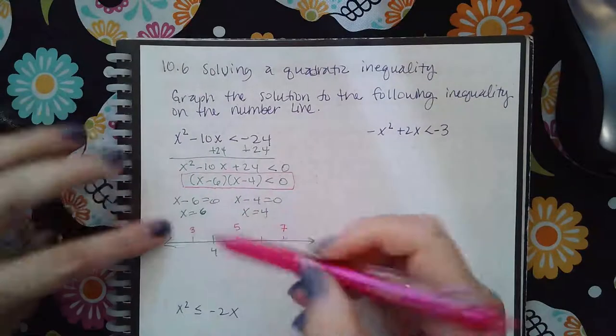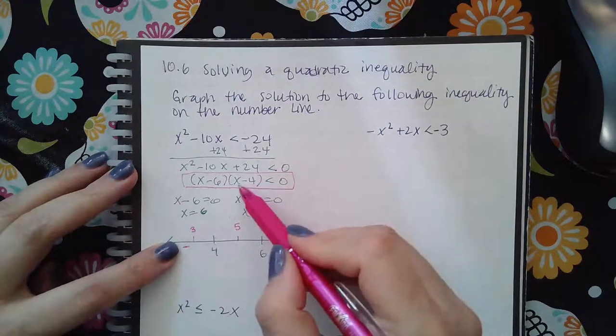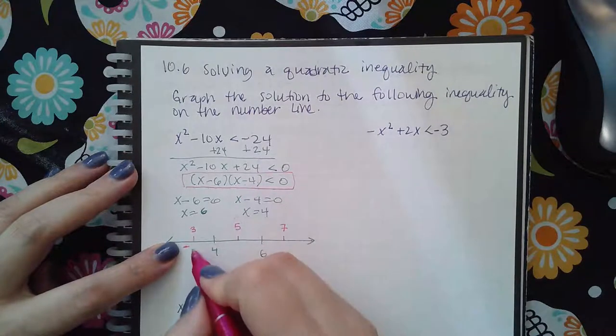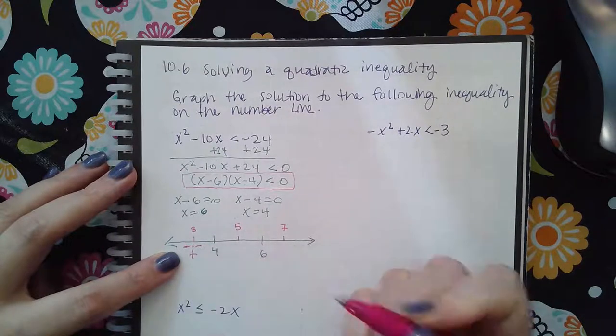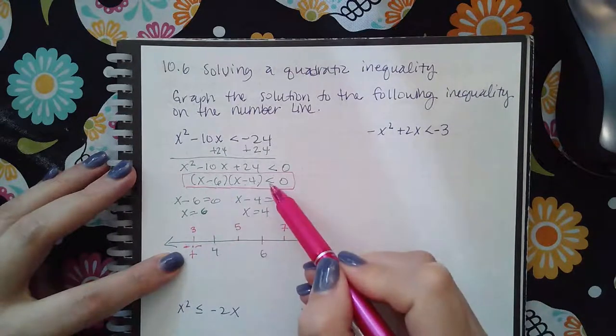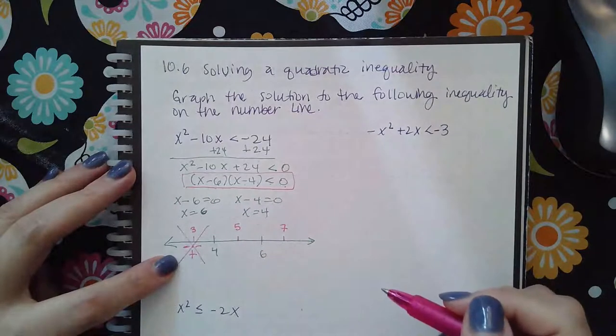So if I plug in three, three minus six is a negative, and then three minus four is a negative. So when I multiply a negative and a negative I will get a positive. But a positive value is not less than zero, so this section will not be included in the solution.